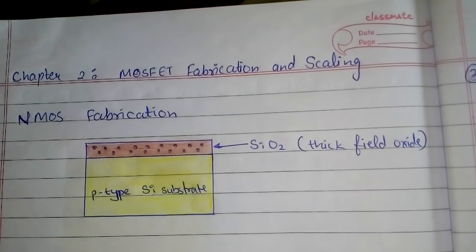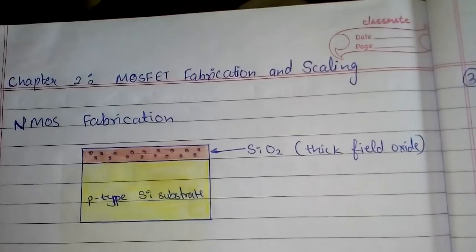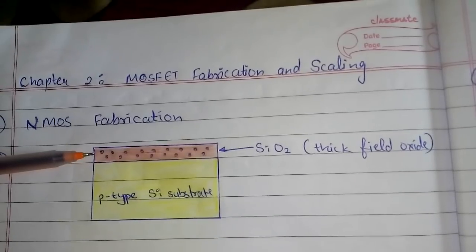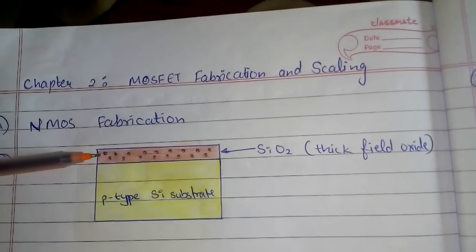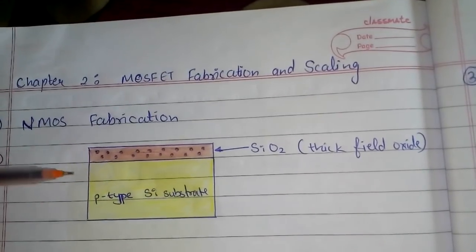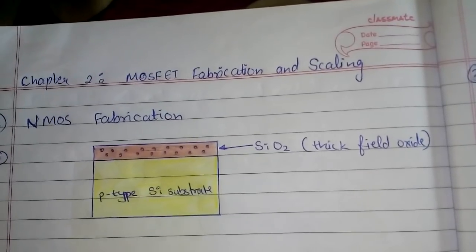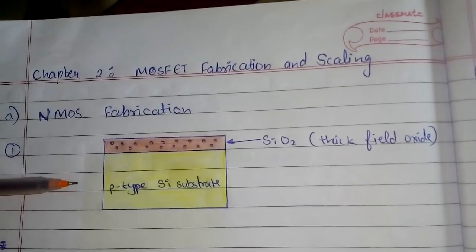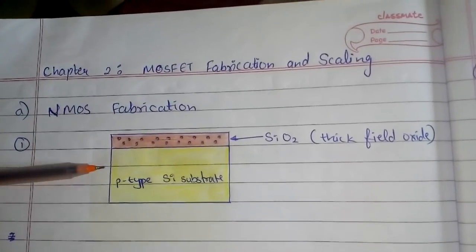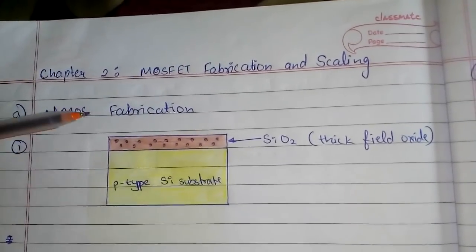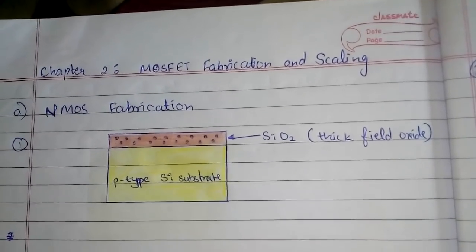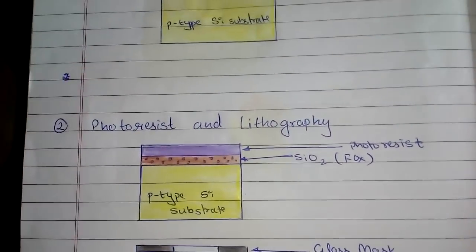On the p-type silicon substrate we put a layer of thick field oxide — that is an SiO2 layer. This SiO2 layer is grown by thermal oxidation and it acts as a shield that protects the substrate from any damage. This is the first step for making any MOSFET — whether PMOS, CMOS, or NMOS. First take a substrate and on that deposit the SiO2 layer.